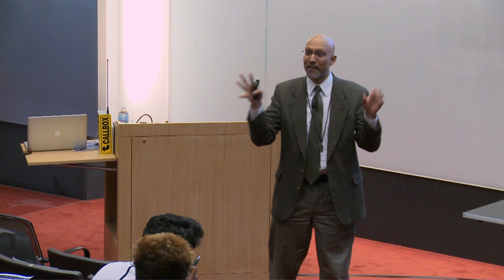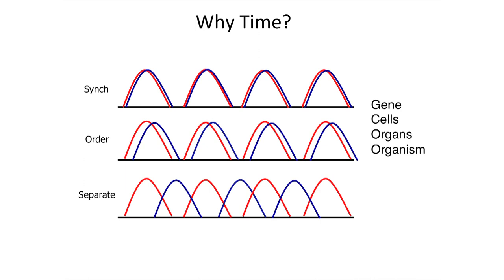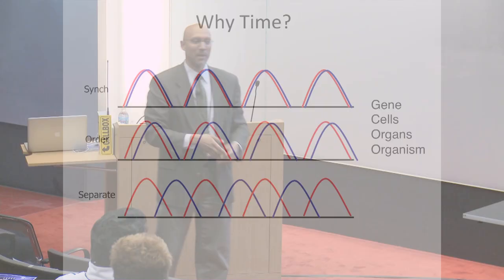Why bother to time things? We can think about it at the level of a gene, cell, organ, or organism. You might want to synchronize two things that have to happen at the same time — if they don't, something bad happens. Or maybe gene A needs to happen before gene B. Or you may need to keep things separate: sometimes during the day you're breaking down fat, other times you're building it back up. You don't want those happening simultaneously — it would be a futile cycle, wasting energy. The clock coordinates the timing of all these events in an adaptive way.